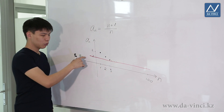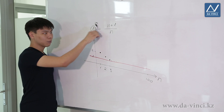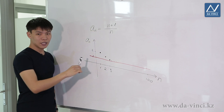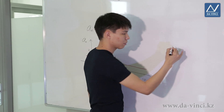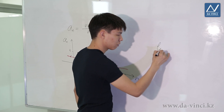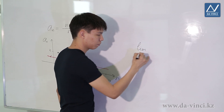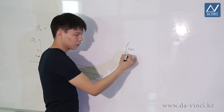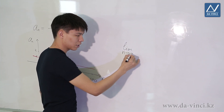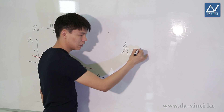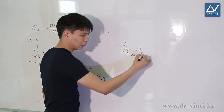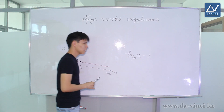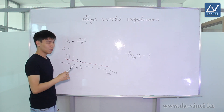Then we can say that the limit of the sequence is 1. We write it as: the limit with N going to infinity of aN equals 1. This is our intuitive understanding of the limit.